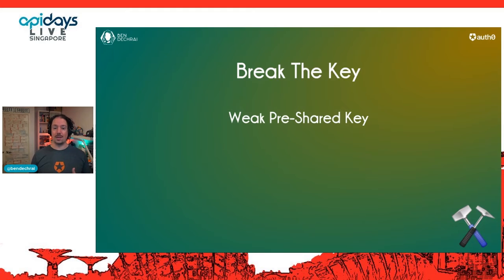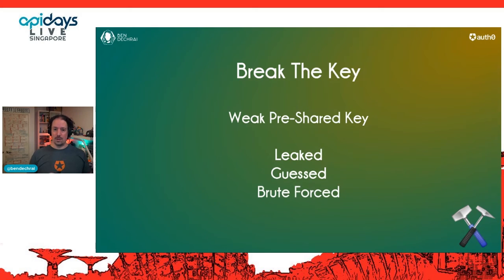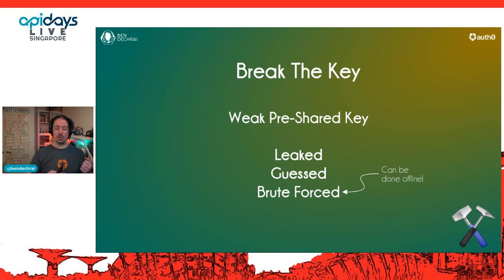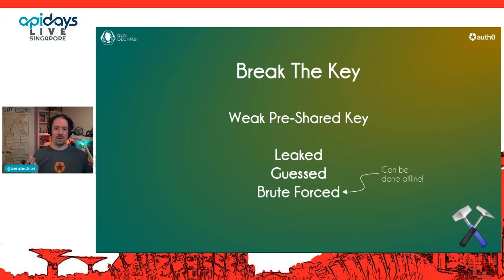Breaking the key: this is the pre-shared key example where you have HS256 with the key shared amongst all different systems. A pre-shared key is exactly like a password, and we all know passwords can get leaked, guessed, and brute forced. The interesting thing with JSON web tokens is they can be tested for validity in an offline space — you don't need to check with any central provider. So you can do an offline brute force by trying to create all possible signatures until one matches, then you know which pre-shared key was used and can generate any token you want. Pre-shared keys are fine if you're in full control of your ecosystem, but as soon as you've got a third-party vendor, start thinking about asymmetric hashing algorithms.